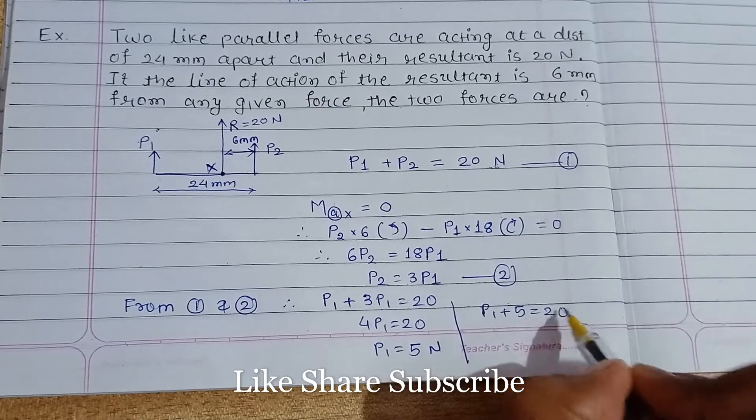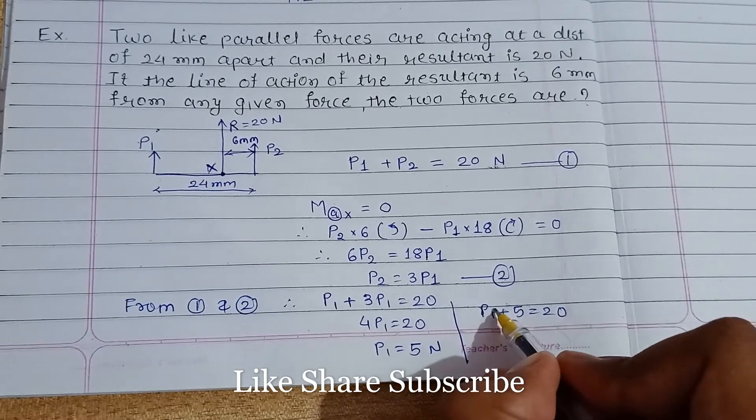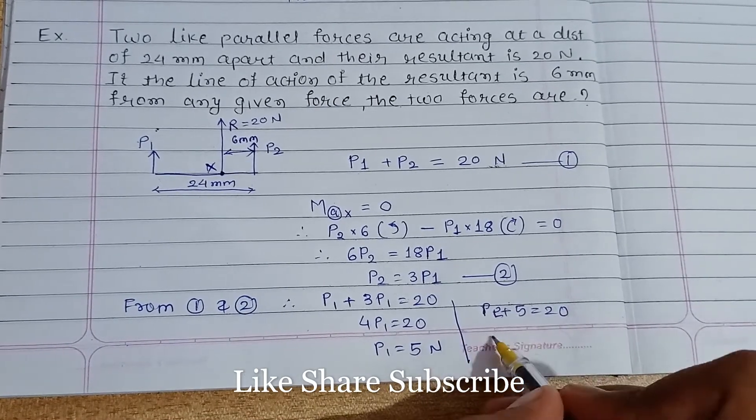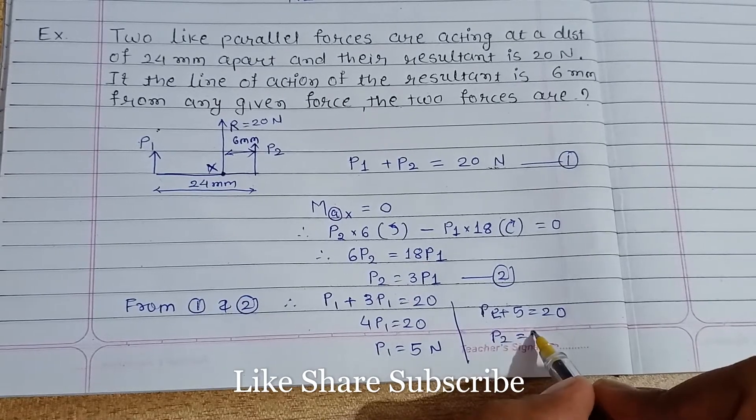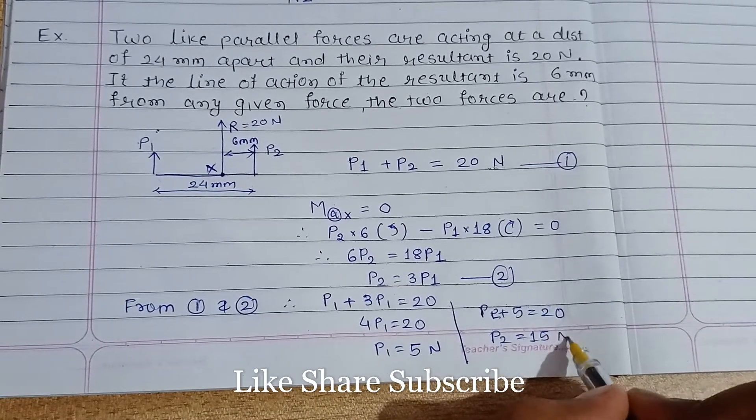And similarly, P2 plus 5 equal to 20. P2 is equals to 15 newton.